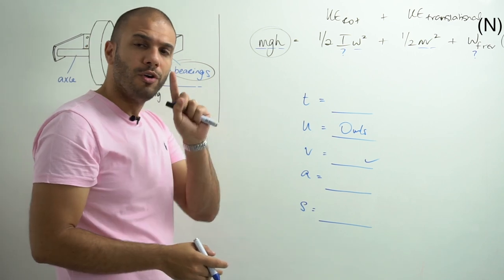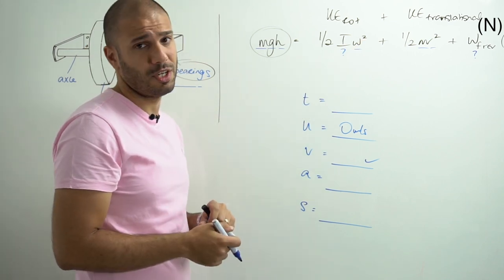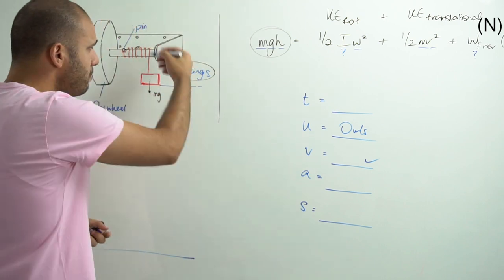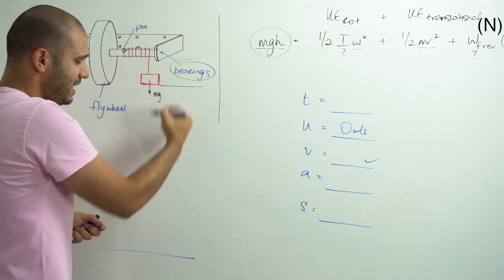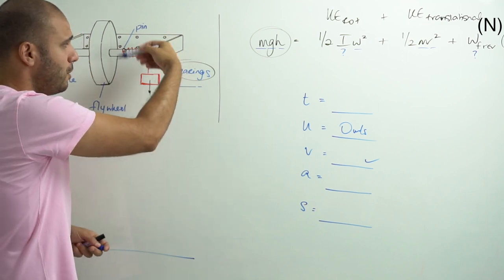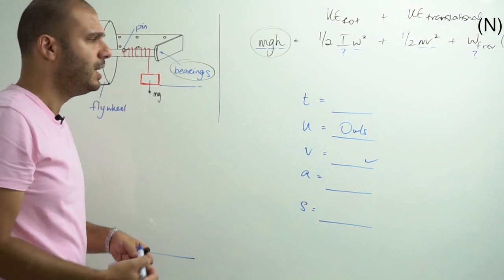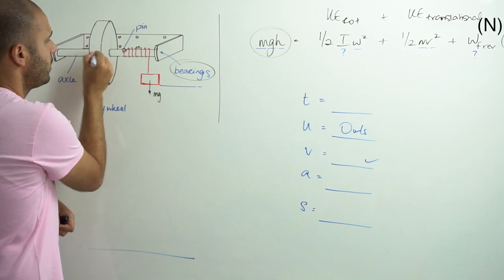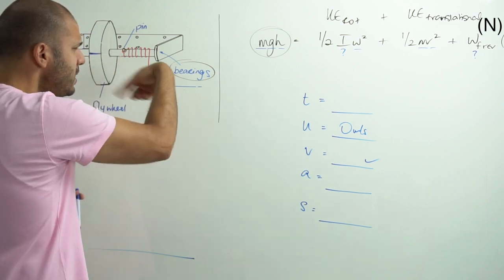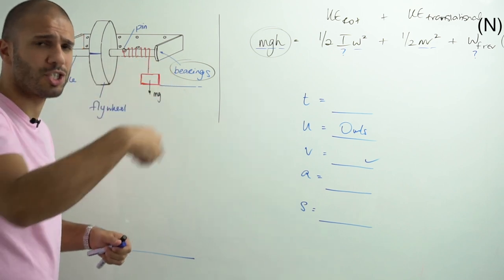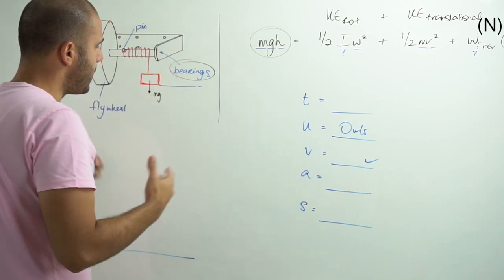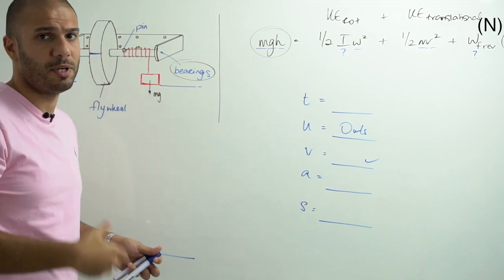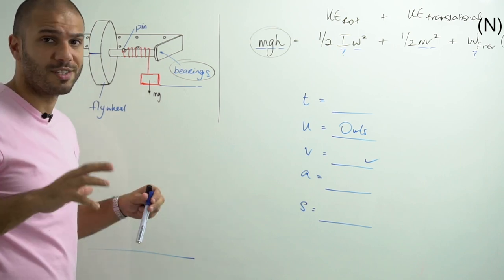We need one more reading: the number of turns. The number of turns until the mass hits the ground is easy if we know how many times the string is wrapped around the axle. However, what we suggest you do is mark the flywheel and count the number of revolutions as it goes round. It might get a bit fast, so you may need to repeat this experiment several times to be sure your readings are correct.